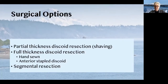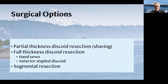Now that we know how to find it and decide how large the lesion is, what do we do with it? There are basically three main options for how to address endometriosis of the bowel wall. First is a partial thickness discoid resection, also known as shaving. This is feasible and preferable for lesions that are about smaller than two centimeters, depending on how they lie, how much kinking there is of the bowel wall.